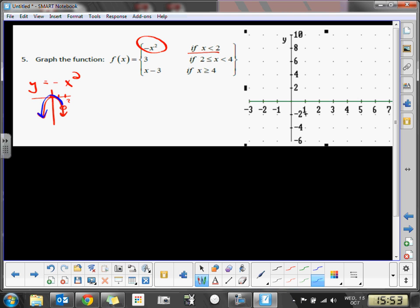So what I'm going to do is put in a 2 for x. So what is negative of 2 squared? When I put in a 2, I end up getting a negative 4 back out. So I'm going to graph the ordered pair 2, negative 4. I'm going to keep the circle open because it is just less than 2.